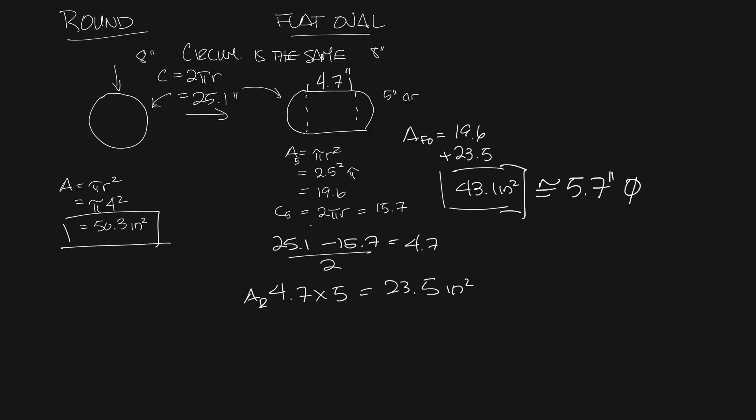So even though these both started out as the same piece of sheet metal, there could be a difference in performance using the flat oval versus a round because the flat oval has less free area.